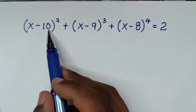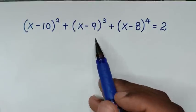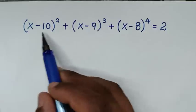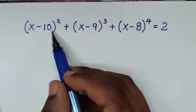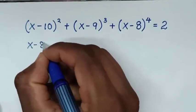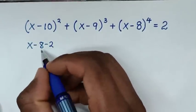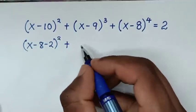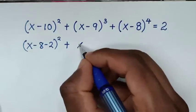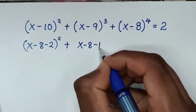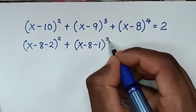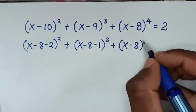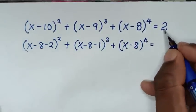Inside the brackets we have x minus 10, x minus 9, x minus 8. So we'll make x minus 8 common. This x minus 10 is the same as (x minus 8) minus 2, because minus 8 minus 2 is minus 10. Then (x minus 9) is the same as (x minus 8) minus 1, bracket power of 3, plus (x minus 8) bracket power of 4 is equal to 2.